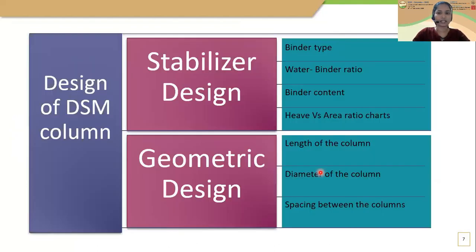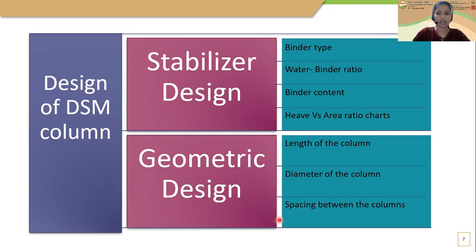The design of DSM columns includes two major designs: stabilizer design and geometric design. The objective of stabilizer design is to develop heave versus area ratio design charts to determine the required treated area ratio for limited heave. Selection of binder type, optimum water-binder ratio, and optimum binder content are the major concerns in stabilizer design. Selection of column length, diameter, and spacing between columns are the major steps in geometric design, with the objective of developing a spacing versus area ratio design chart.